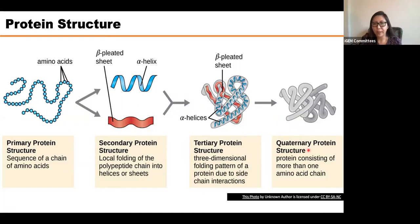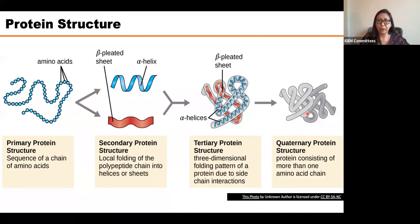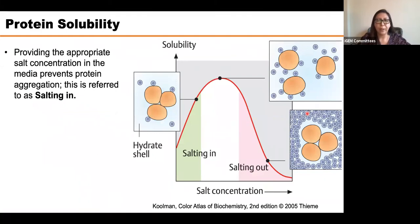Then we get the tertiary structure, where the protein gets its three-dimensional folding pattern. These peptides can then form subunits, giving us the quaternary protein structure. I'm mentioning this because it's really important to understand that a protein needs to be perfectly folded to get its function, and because of this 3D structure we get specific physical-chemical properties for each protein.